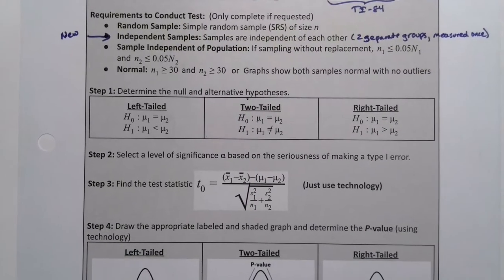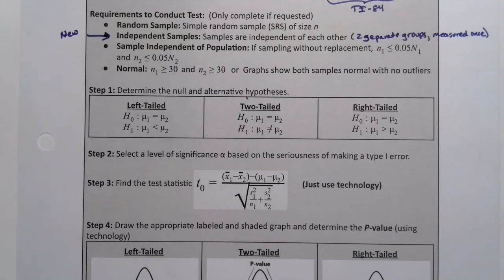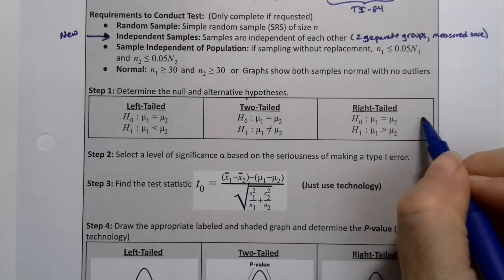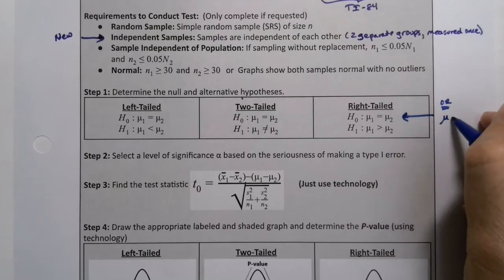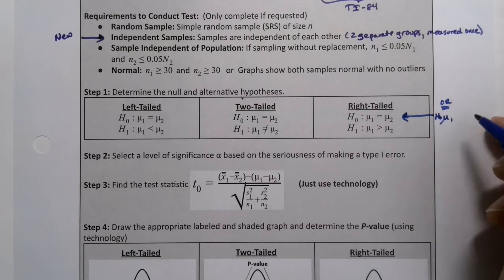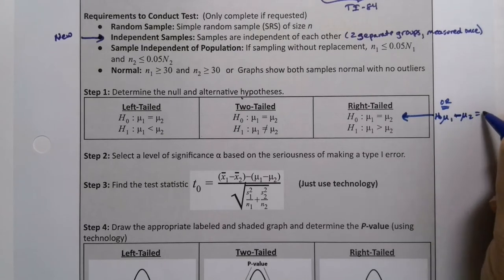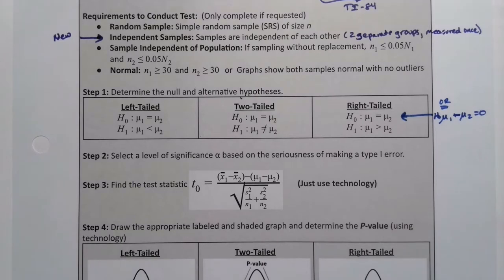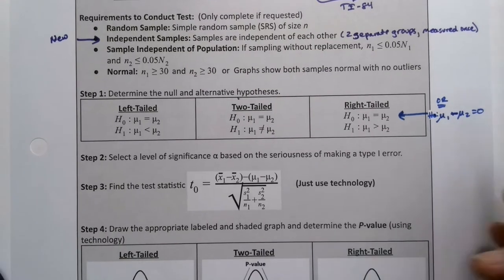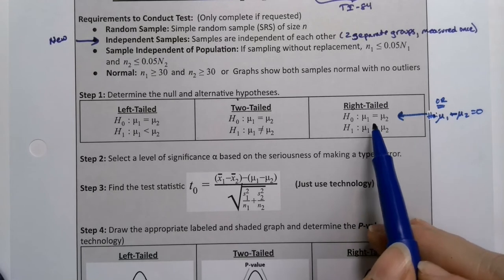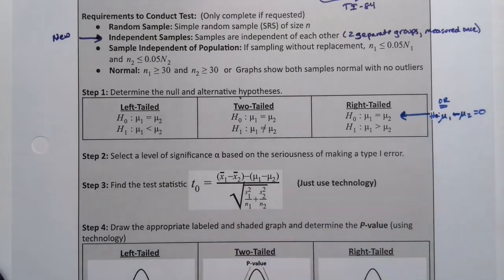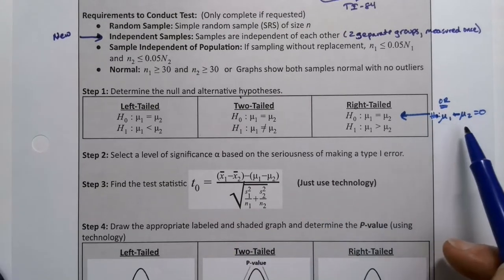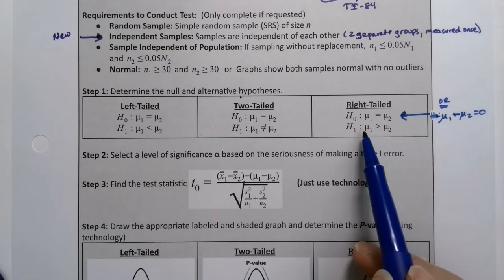Looking at the null and alternative hypotheses, in chapter 11 it's a little easier than chapter 10 — you just assume automatically that the two groups are equal to each other. Another way to write that is mu1 minus mu2 equals zero. Sometimes computer programs use one version, sometimes the other — the TI-84 uses one version while StatCrunch uses the other, so either is fine.